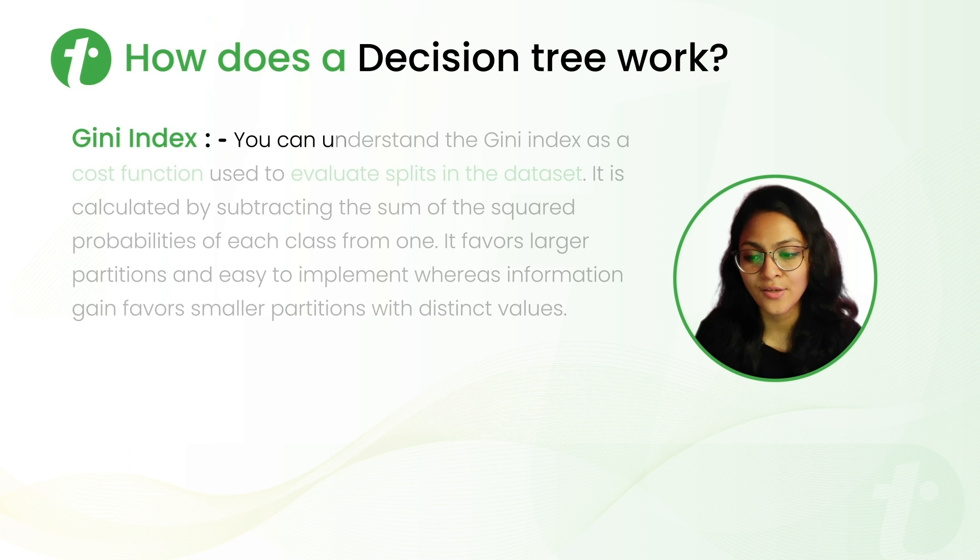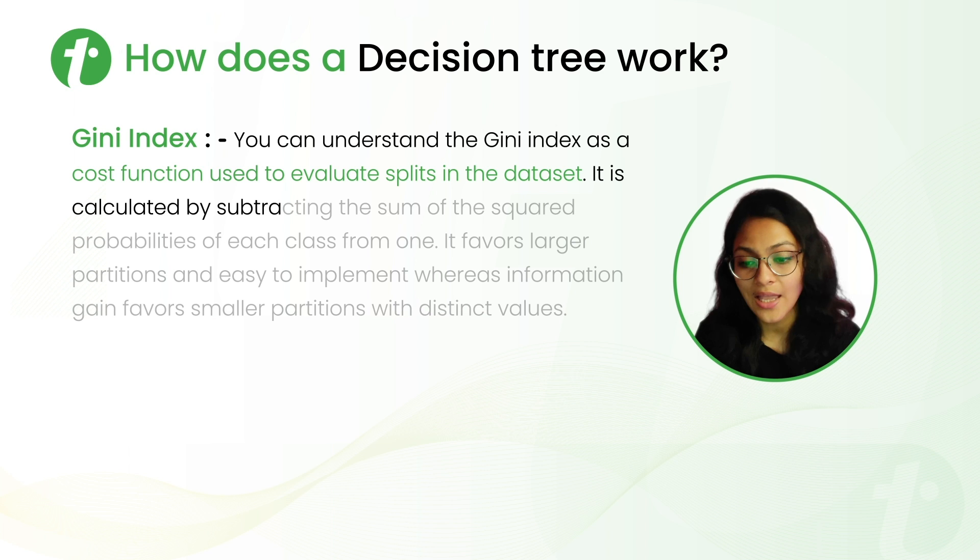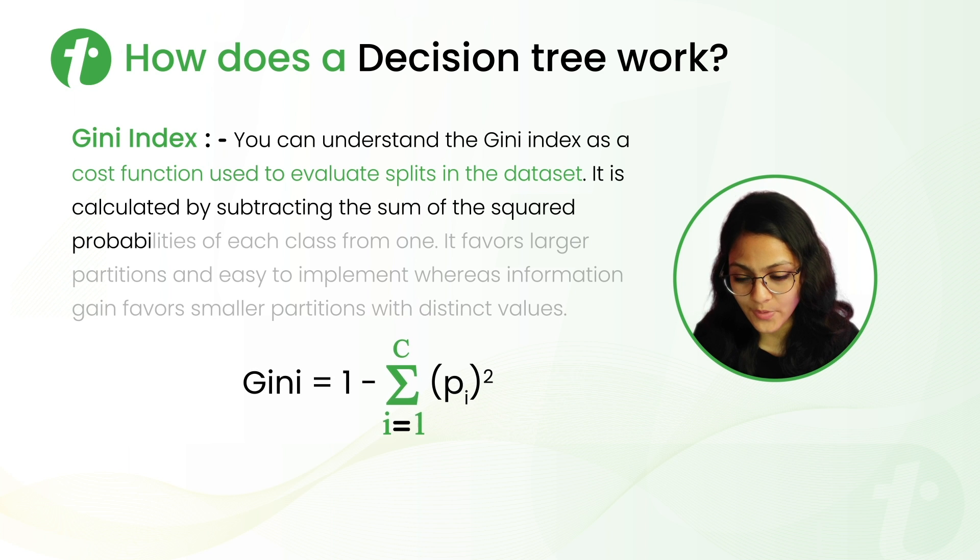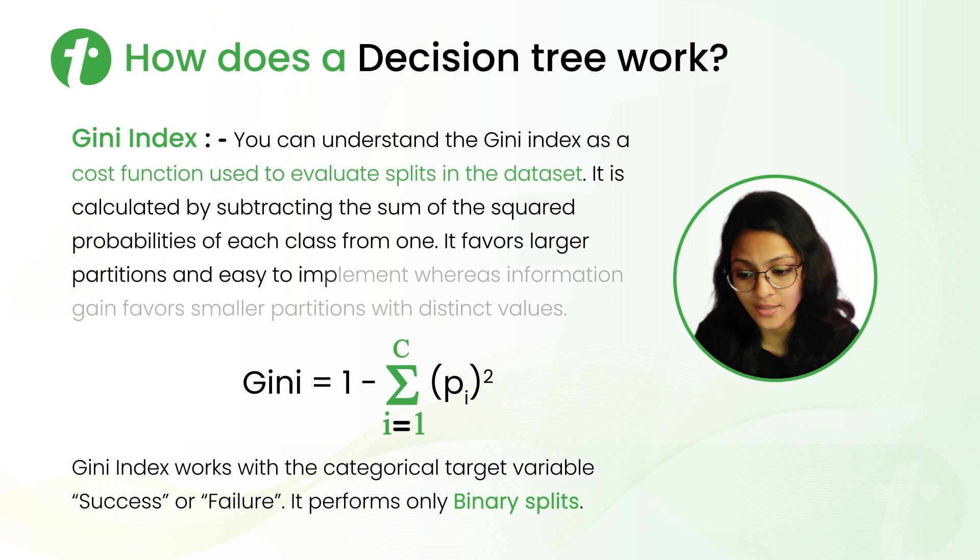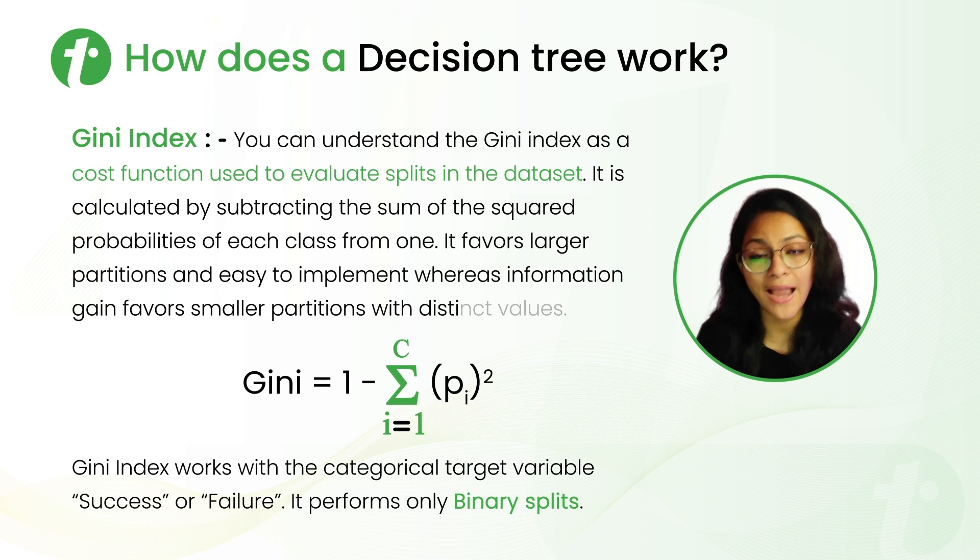Now, let's talk about the gini index. You can understand the gini index as a cost function used to evaluate splits in the dataset. And it is calculated by subtracting the sum of squared probabilities of each class from 1. And it performs only on binary splits.